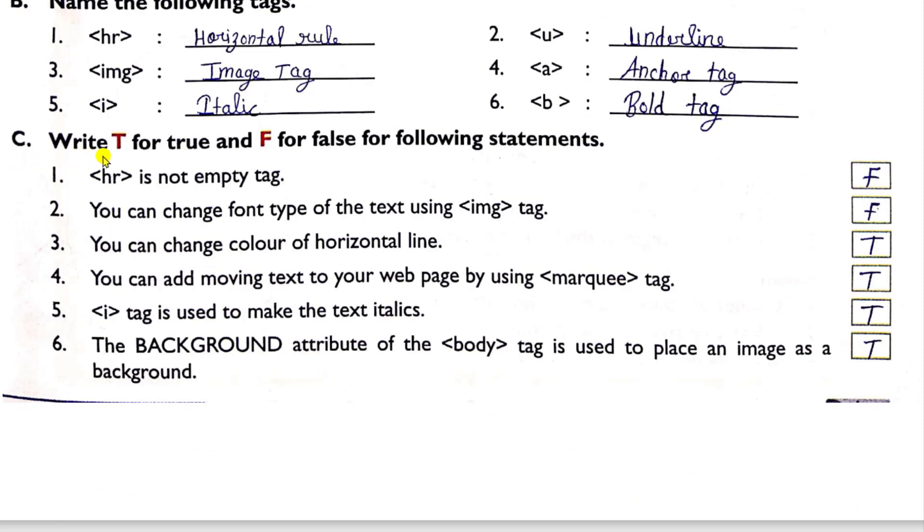Third question, write T for true and F for false statements. So HR is not empty tag. Answer is false because HR is empty tag. Second one is you can change font type of the text using IMG tag. Answer is false. Third, you can change color of horizontal line. Answer is true. You can add moving text to your web page by using marquee tag. Answer is true.